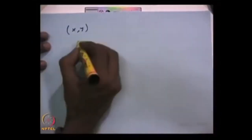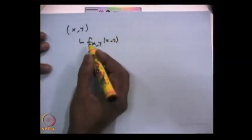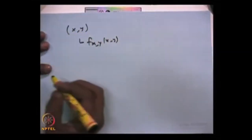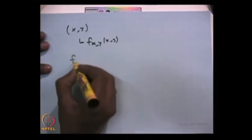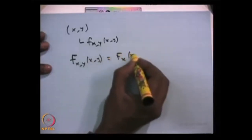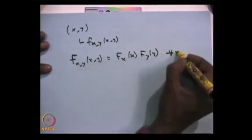Now I am going to discuss what is the meaning of independent random variables. Suppose you have two random variables X and Y and you know the joint probability density function or joint probability mass function, based on whether the random variables are both discrete or continuous. Then if both random variables are independent, the CDF of this random vector is the same as the product of the CDFs of individual random variables, and this is valid for all x, y.